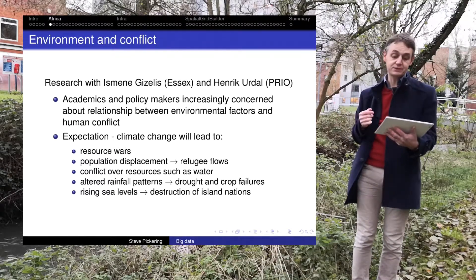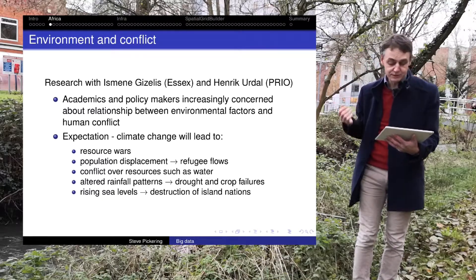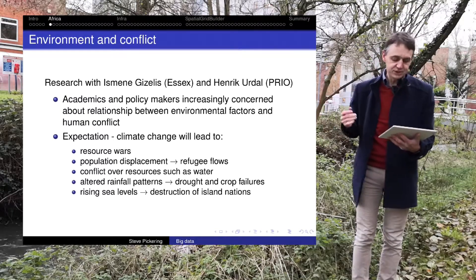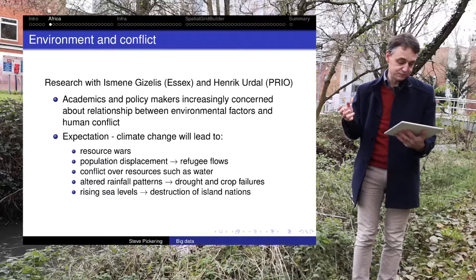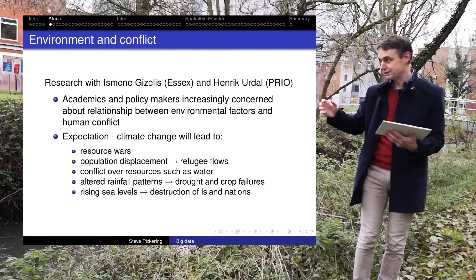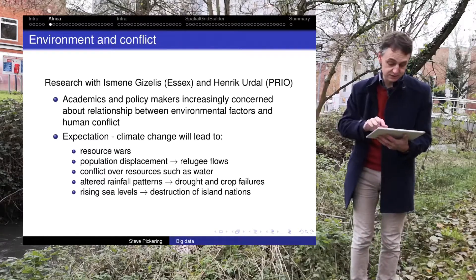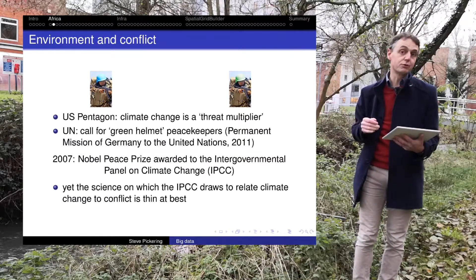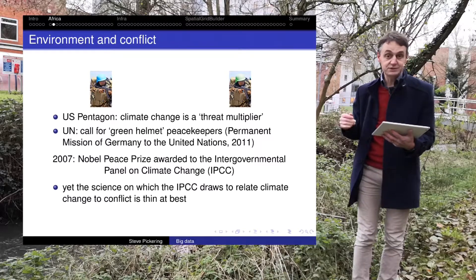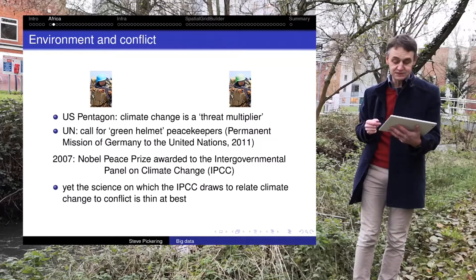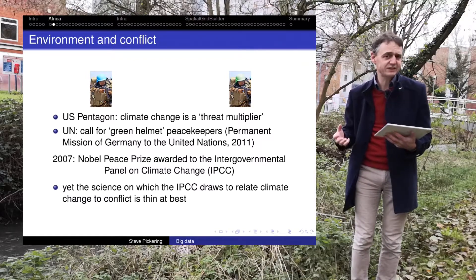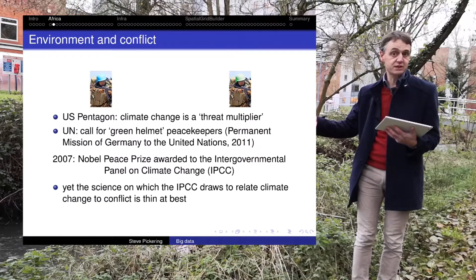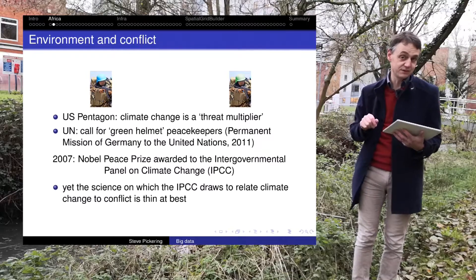The reason is that academics and policy makers are increasingly concerned about the relationship between environmental factors and human conflict. There is an expectation that climate change will lead to things like resource wars, population displacement and similar. The Pentagon has said that climate change is a threat multiplier, the UN has called for the creation of green helmet peacekeepers, and the 2007 Nobel Peace Prize was given to the IPCC. But there's not much science actually linking climate change to human conflict — we know that human-induced climate change is occurring, but whether that links to conflict is another matter.